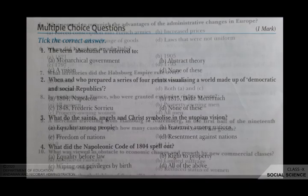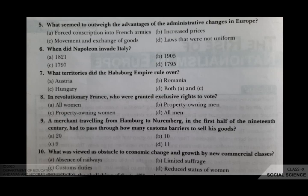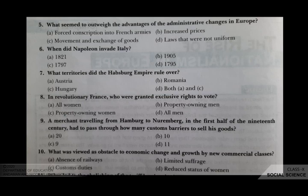The next question is: what seemed to outweigh the advantages of the administrative change in Europe? Your options are A forced conscription into French armies, B increased prices, C movement and exchange of goods, D laws that were not uniform. The correct answer is A, forced conscription into French armies.